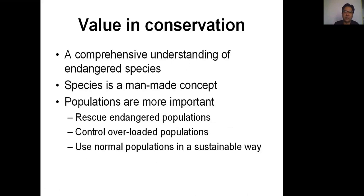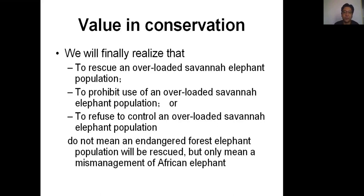A comprehensive understanding of endangered species is needed. Species is a man-made concept — populations are more important, as that is how animals gather together and make a living. What we need to do is rescue endangered populations, control overloaded populations, and use normal populations in a sustainable way. After this split listing, we will realize that prohibiting all use does not mean an endangered forest elephant population will be rescued; it only means mismanagement of African elephants.